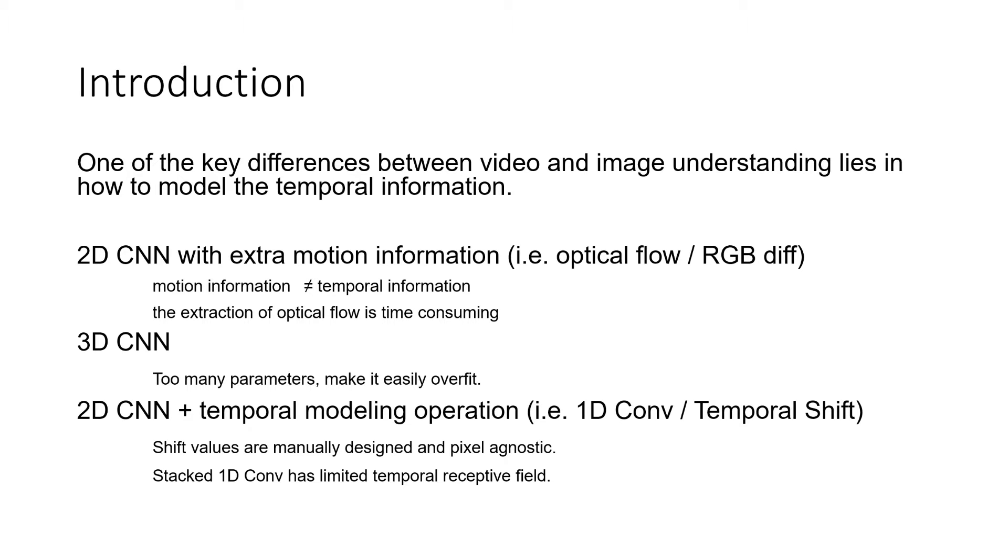There are three main series of works to solve this problem. The earliest ones are established on the two-stream 2D CNNs. In such framework, a separate stream which relies on extra motion features, for example optical flow or RGB diff, is employed to incorporate the temporal information. However, these kinds of works have significant drawbacks. First, motion information doesn't equal temporal information because motion information only reflects the temporal changes within a very short temporal window, and certainly the extraction of motion information like optical flow is time-consuming and this limits the application in the real world.